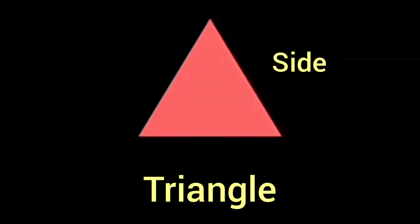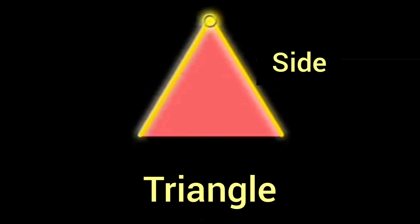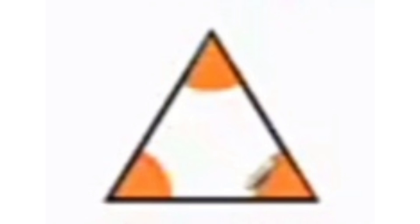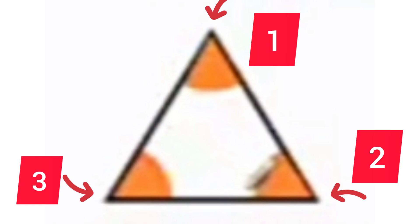See students, this is a side of a triangle. When two sides or line segments meet at a common point, it forms an angle. That common point is called the vertex. So students, angles of a triangle are 1, 2, and 3.